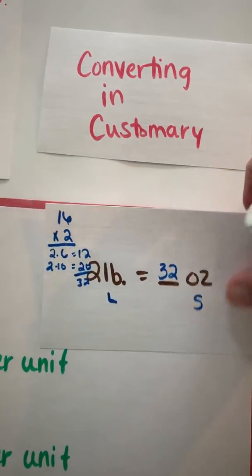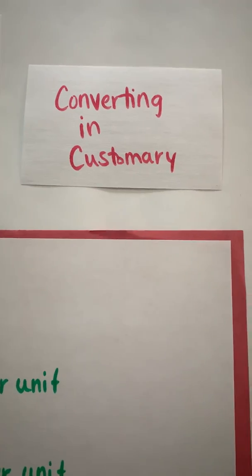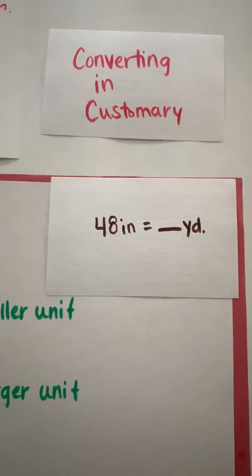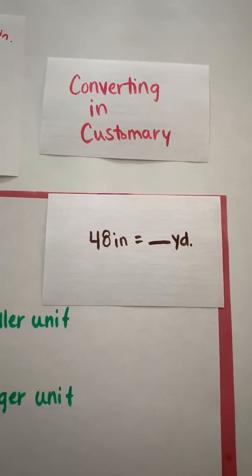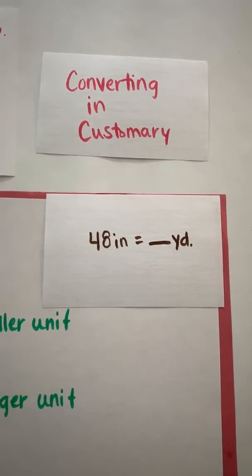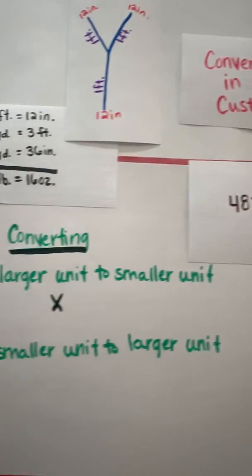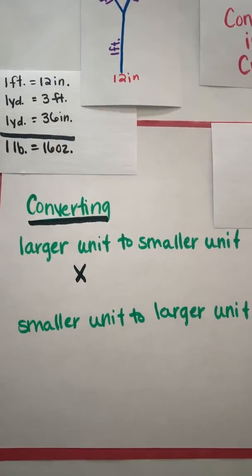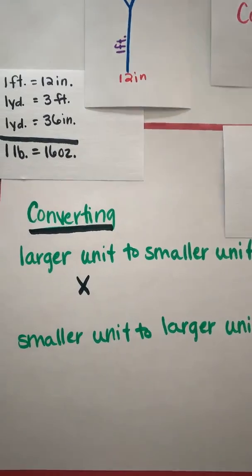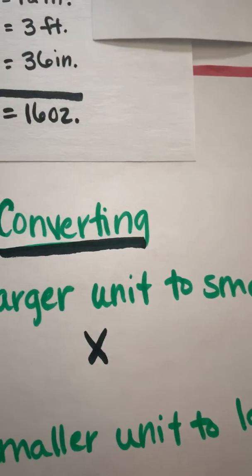Now let's step it up and look at converting from a smaller unit to a larger unit. So now I have 48 inches is equal to a yard. When we are going kind of the backwards of that, if you think back, we know that the opposite of multiplication is division. So when I'm converting from a smaller unit to a larger unit I am actually going to be dividing.